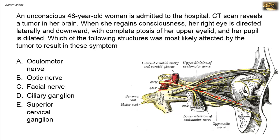In addition, there is ptosis of the upper eyelid. As mentioned earlier, the upper eyelid is elevated by levator palpebrae superioris, which is also supplied by the oculomotor nerve. So when there is oculomotor nerve damage, this results in ptosis and pupillary dilatation — ptosis because of levator palpebrae superioris, and pupillary dilatation because of damage to the parasympathetic fibers that supply the sphincter pupillary muscle and relay in the ciliary ganglion. The scenario is consistent with oculomotor nerve damage.